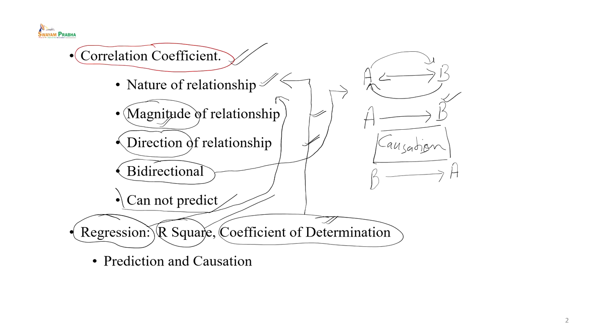यहाँ पर यह समझ लेना बहुत महत्वपूर्ण है कि regression analysis में causal relationship को स्थापित करने के लिए theoretical support एवं data collection या variable के exposure का क्रम एक essential consideration है। correlation में दोनों variables की same position होती है, दोनों एक दूसरे से जुड़े हुए हैं, कोई किसी का cause या effect नहीं होता। इस प्रकार regression correlation के basic principles पर आधारित है और नई information प्रदान करता है।